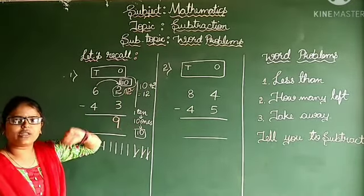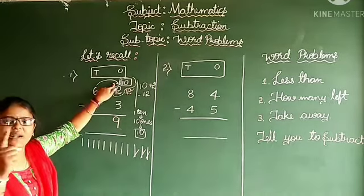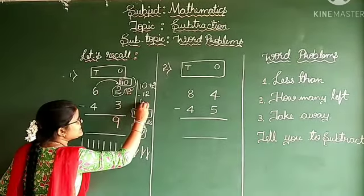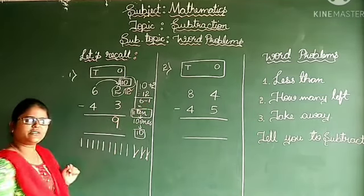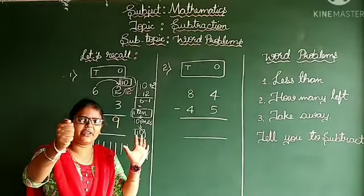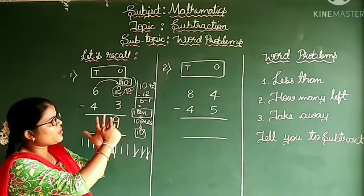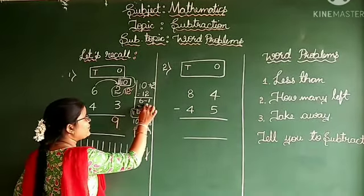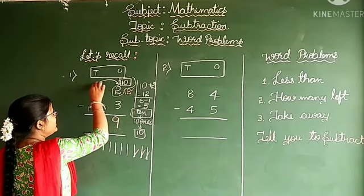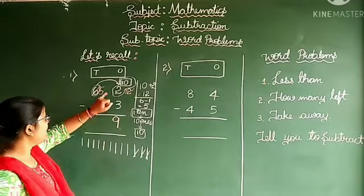After completing the 1s part, we calculate the 10s place. You gave a borrow of 1 ten to the 1s place, so now it's 6 minus 1. Keep 6 fingers, close 1 finger — 1, 2, 3, 4, 5 fingers are left. Therefore 5. Cancel this 6 and write 5, because you gave 1 ten borrow to the 1s place and are left with 5.